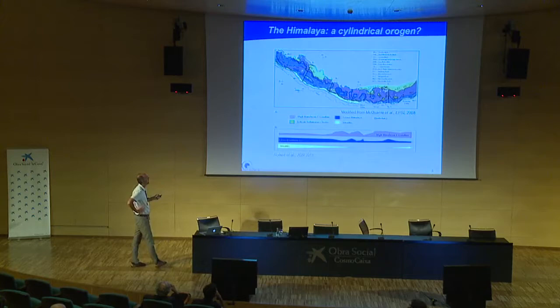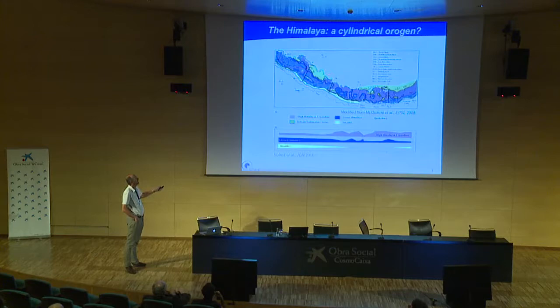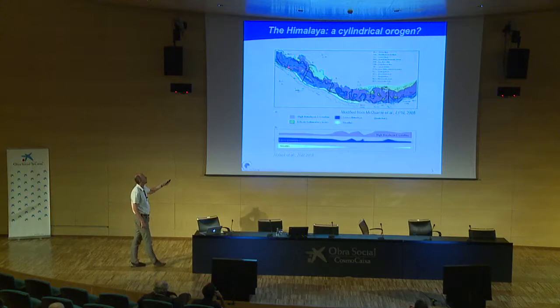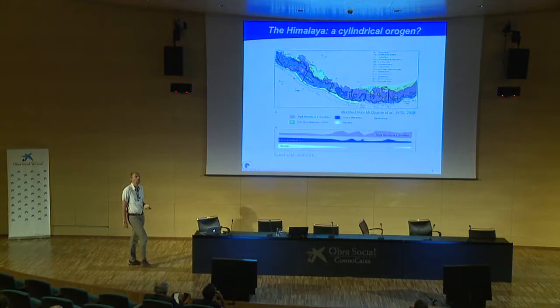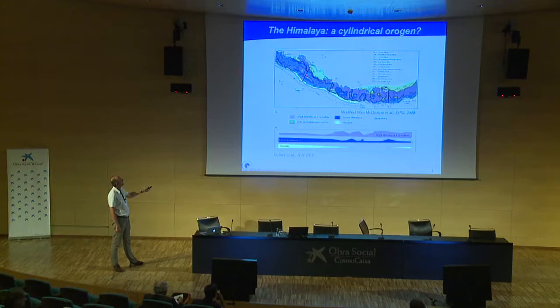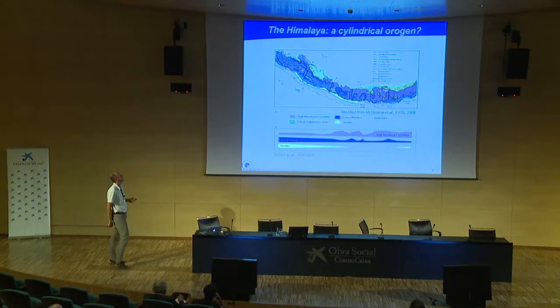From north to south: in green we have Tethyan sedimentary series — basically Tibetan sediments. Then we have what is known as the High Himalayan Crystalline, or Greater Himalayan Series, in pinkish colors — these are high-grade metamorphic rocks, bounded from the Lesser Himalaya by the Main Central Thrust. The Main Boundary Thrust bounds the Lesser Himalaya from the Siwalik Series, which are Miocene-Pliocene foreland basin sediments.